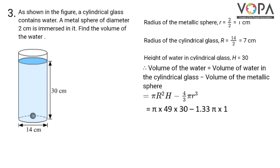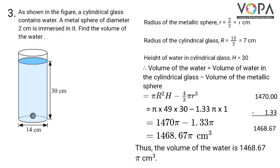Substituting the values we have π × 49, that is 7 squared, × 30 minus 4/3 gives you 1.33 × π × 1 cubed that is 1. So 49 × 30 gives you 1470π minus 1.33π. And the subtraction gives you 1468.67π. Thus the volume of the water is 1468.67π cm³.